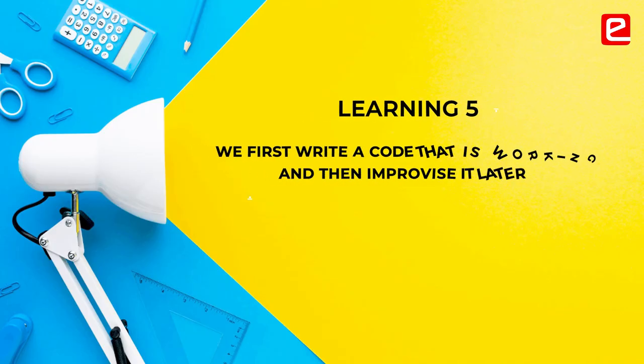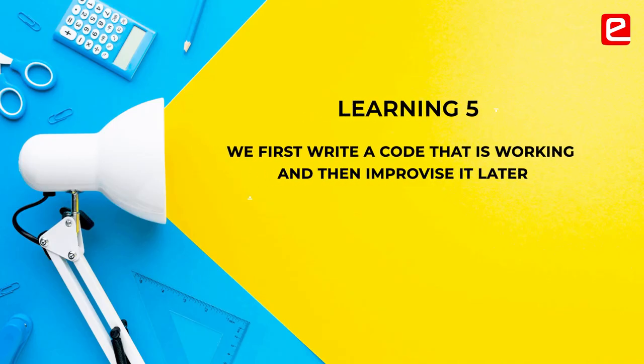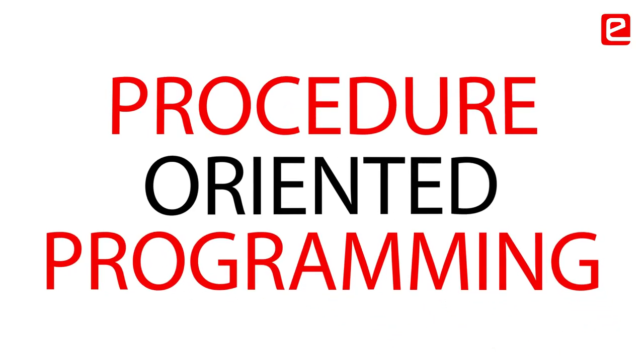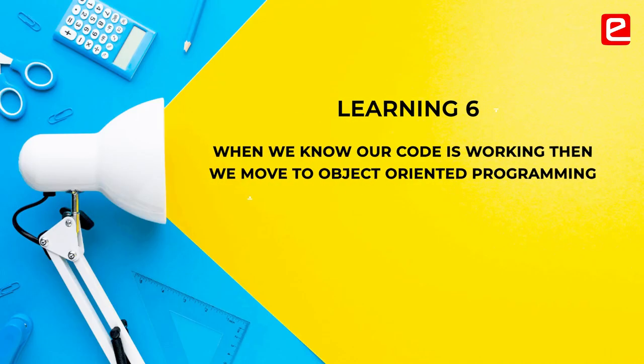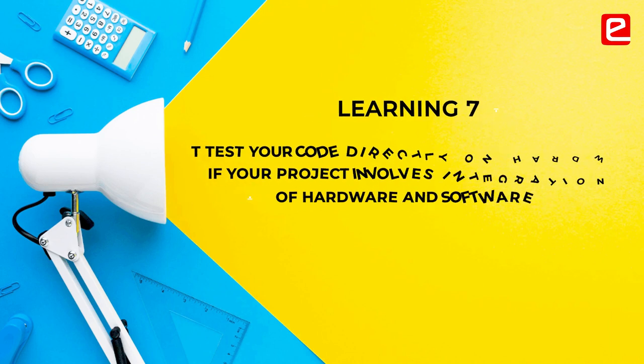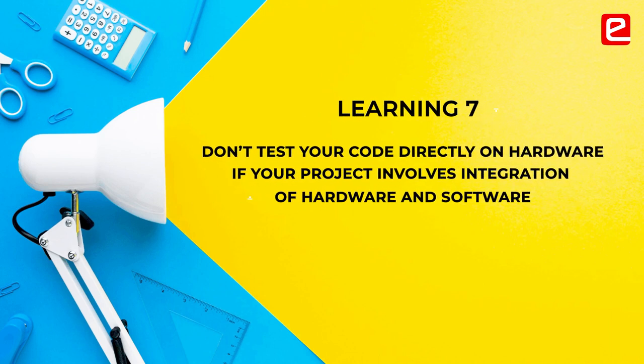Our first approach was: don't write perfect code first — write code that is working first. We used procedure-oriented programming, just wrote a function, and after confirming the code works, we moved to an object-oriented approach. If your project is hardware plus software based, don't test it directly on your hardware.